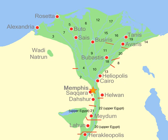Some nomes were added or renamed during the Greco-Roman occupation of Egypt. For example, the Ptolemies renamed the Crocodileopolitan nome to Arsinoe. Hadrian created a new nome, Antinopolis, for which Antinopolis was the capital.